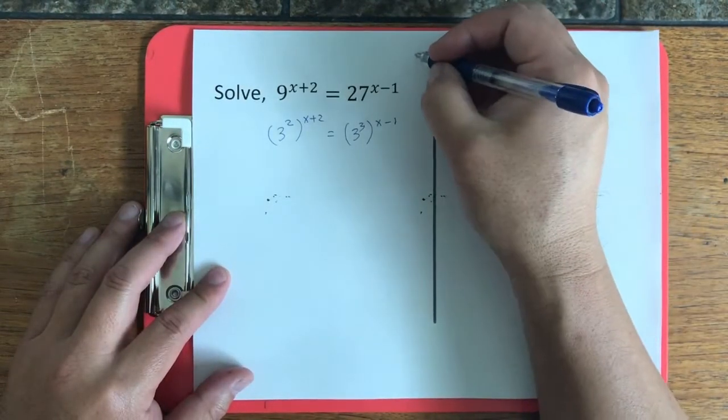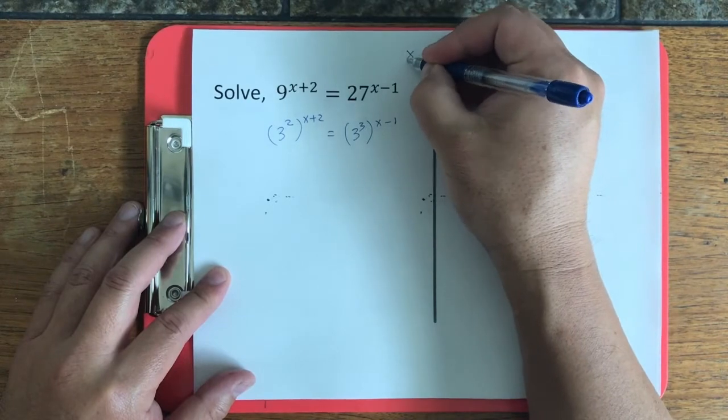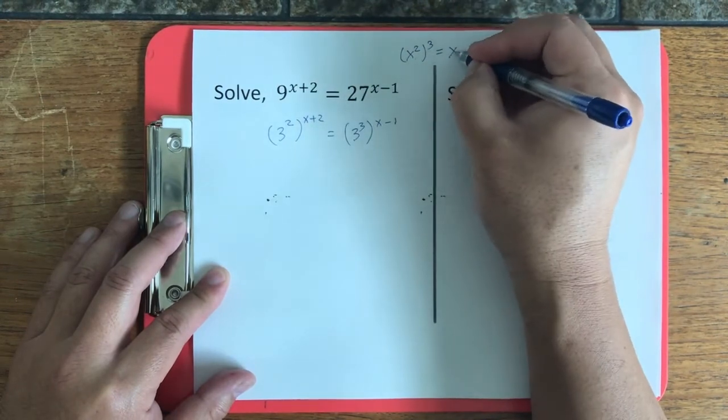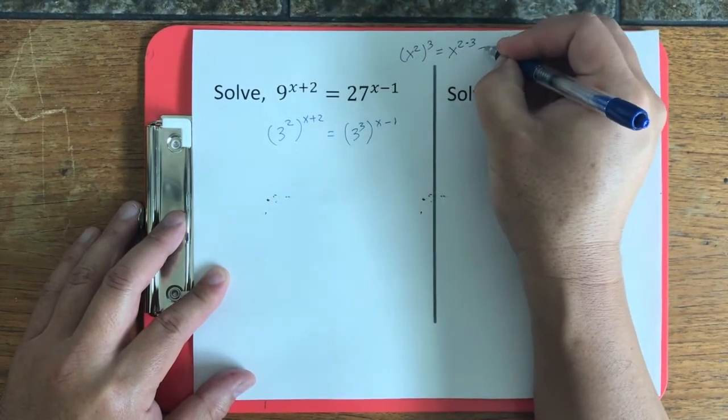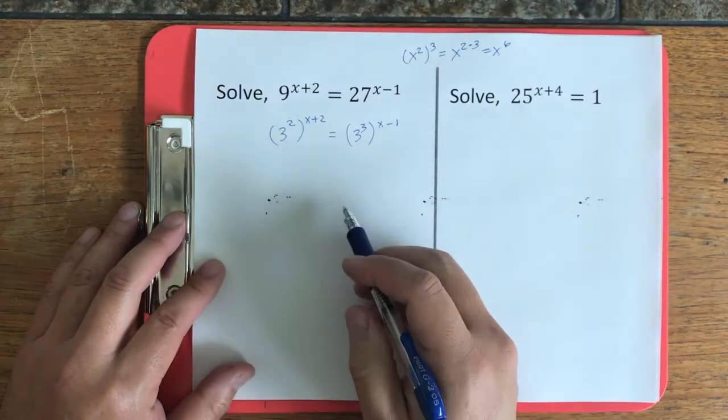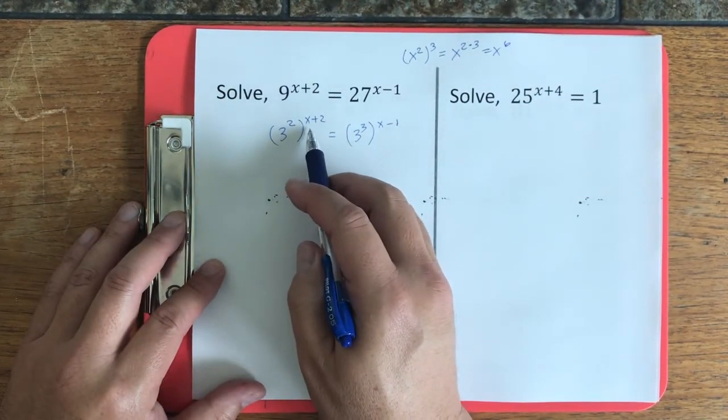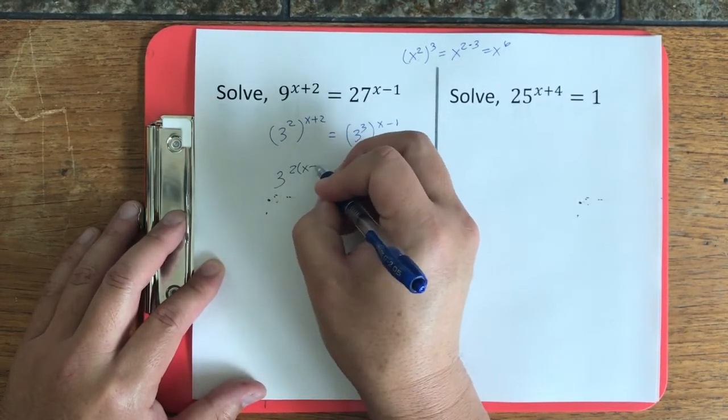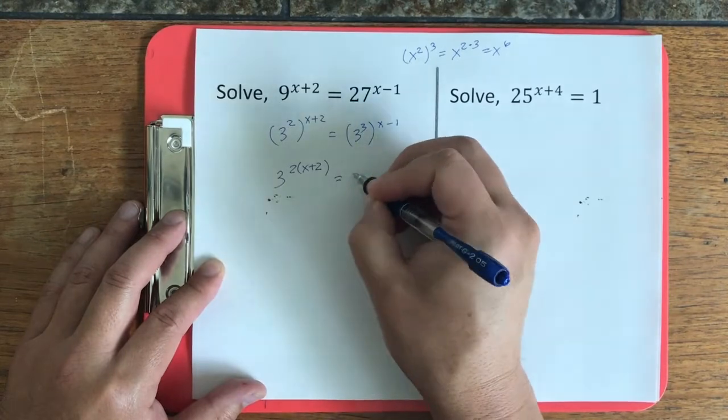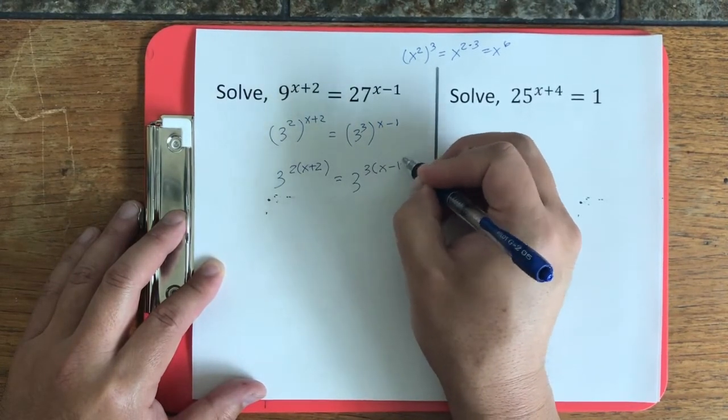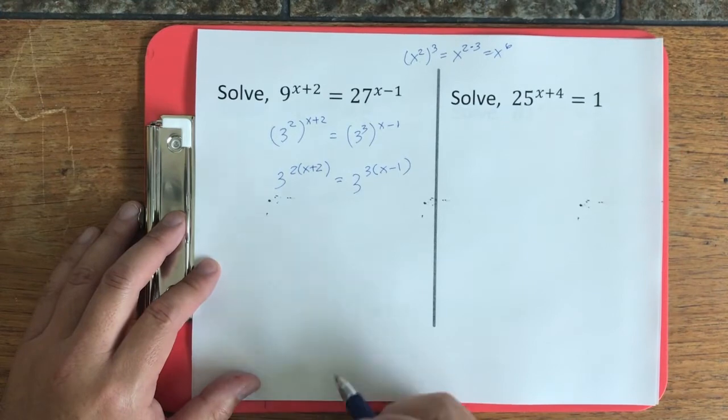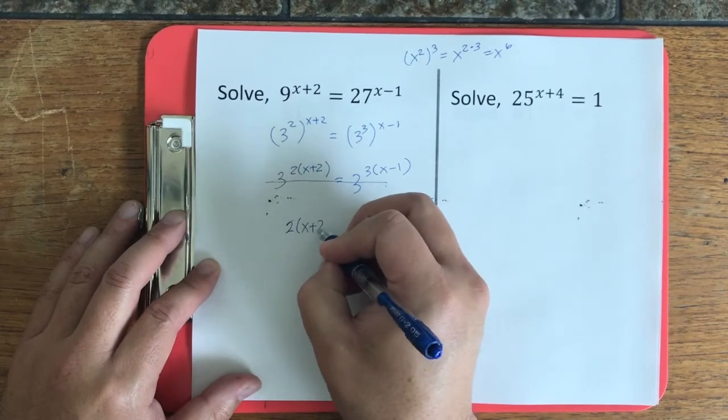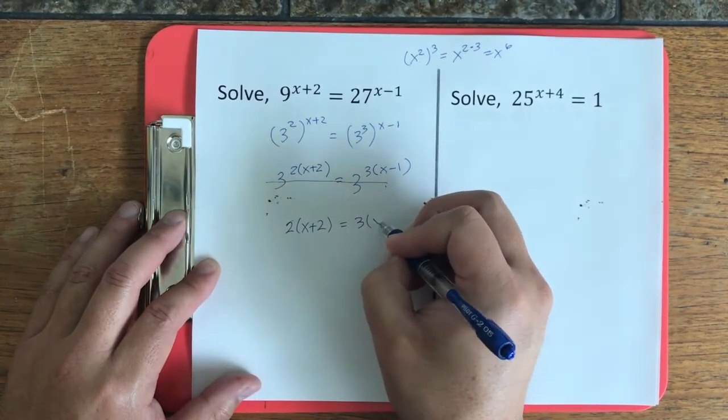Now, in past videos, you saw that if you have an exponent of an exponent, right? 2 to the power of 3, all you do is multiply. Now, that's true here, whether this is a number or whether this is an expression. So what we're going to do here now is just multiply. Now that we can see that the base is the same, we can cross them out and we get 2x plus 2 is equal to 3x minus 1.